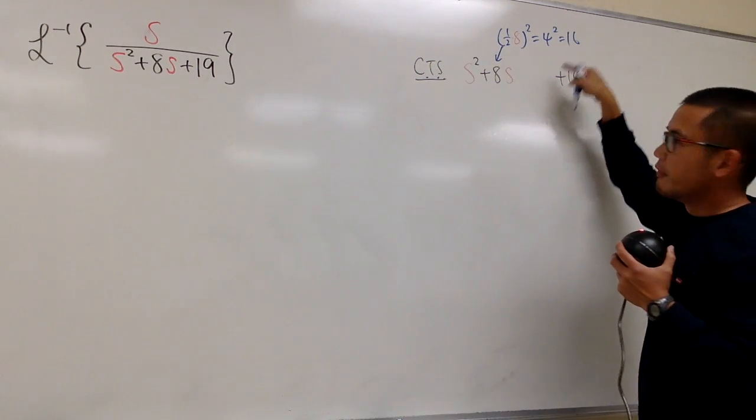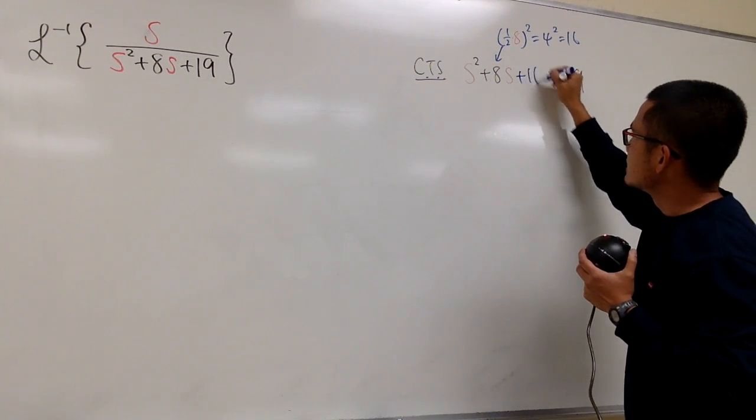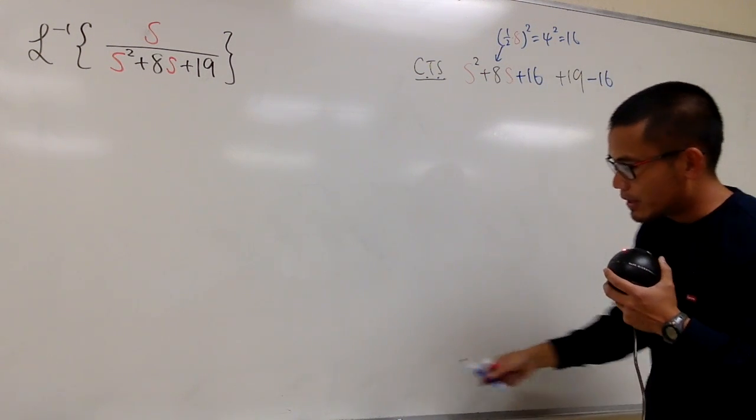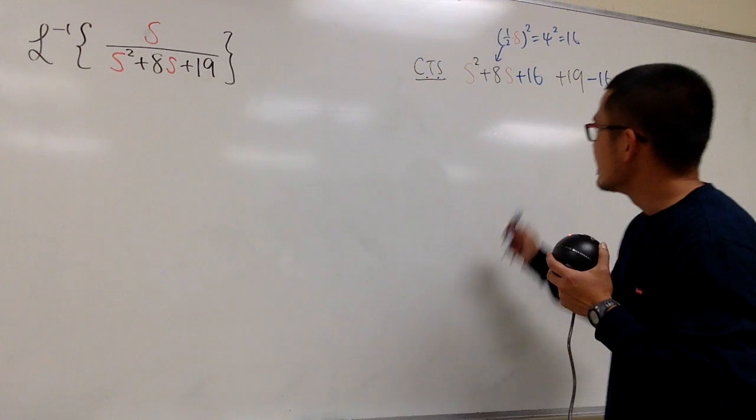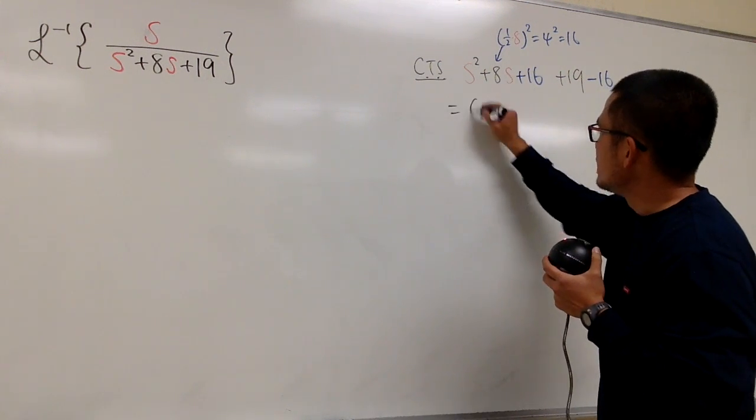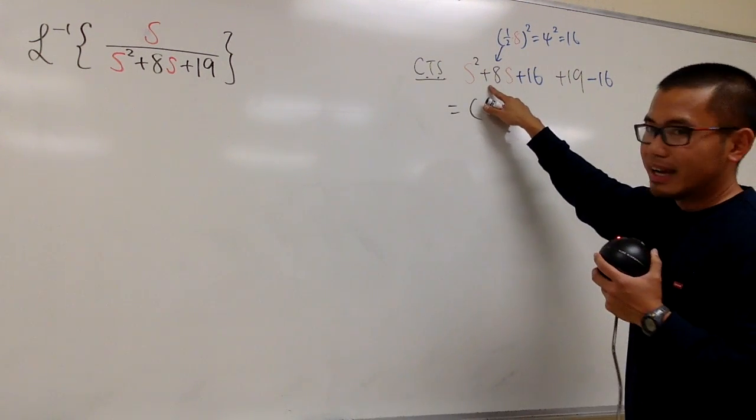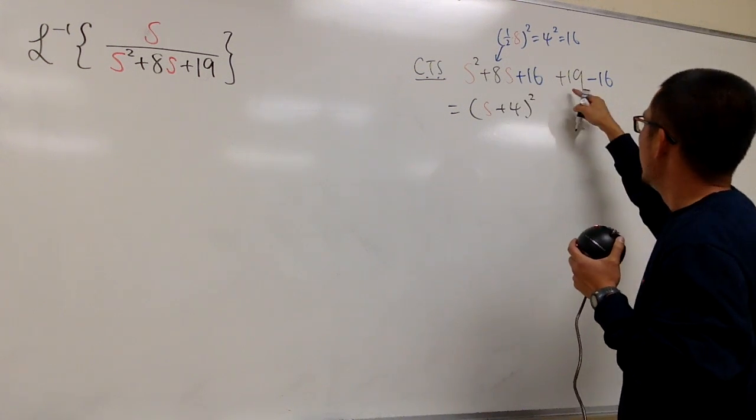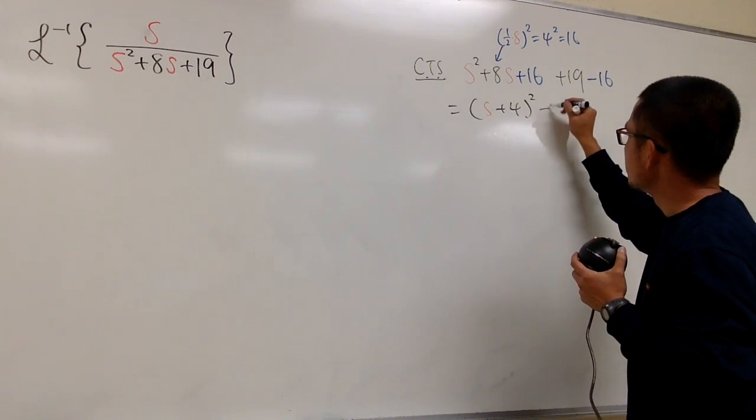This is the number they have to add right here. So let's go ahead and plus 16. But in that case, be sure you minus 16 at the end, so that way you can pretend nothing happened. And then you will see, this is going to be s plus 4 squared, and then 19 minus 16 is plus 3. This will be your new denominator.